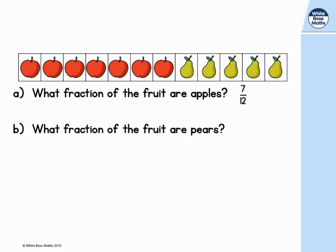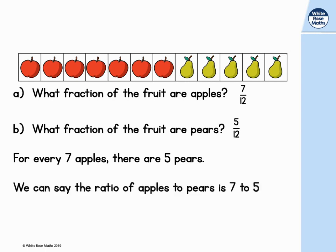What fraction of the fruit are pears? Well again, we can see we still have twelve equal parts, but we're interested in what fraction of those are pears? Well out of the twelve pieces of fruit, five of them are pears. So the fraction would be five twelfths. So for every seven apples, there are five pears. And we can say the ratio of apples to pears is seven to five, or we can say the ratio of pears to apples is five to seven.